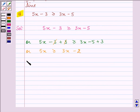On subtracting 3x from both the sides, we have 5x minus 3x is greater than or equal to 3x minus 2 minus 3x.